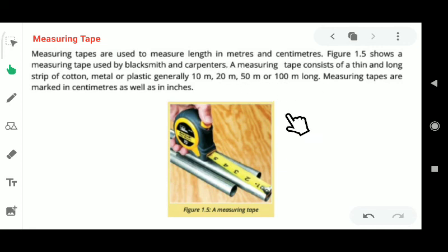The measuring tape is made of a strip which can be made of metal, plastic, or cotton. It can be made of different materials. The length of tape can be 10 meters, 20 meters, 50 meters, or 100 meters long.